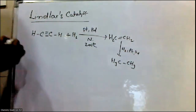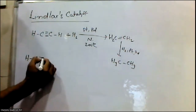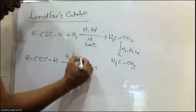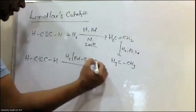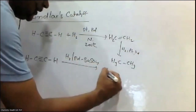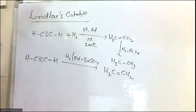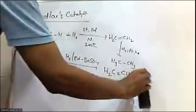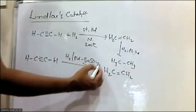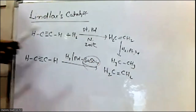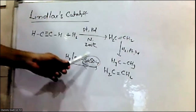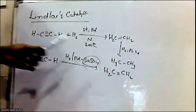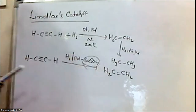But if we use Lindlar's Catalyst — H2 by palladium by barium sulfate — the reaction stops at the alkene stage. The further reaction does not occur, because the catalytic poison decreases the activity of the catalyst, so the reaction stops at the alkene state.